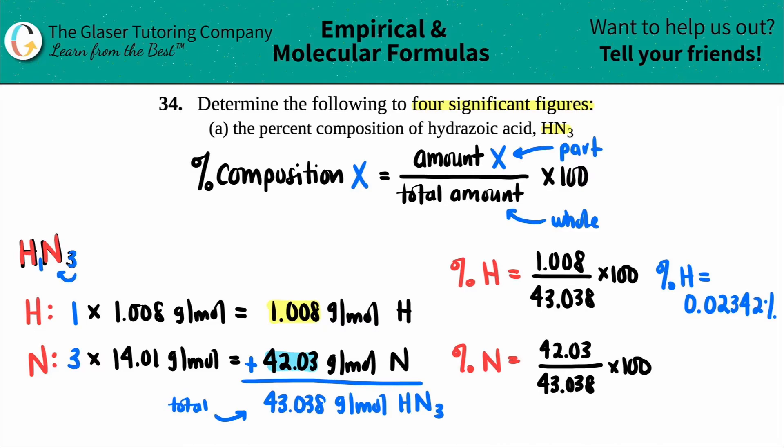For nitrogen, let's see. 42.03 divided by 43.038 times 100. Oh, hold on. I forgot to times 100 by the last one.